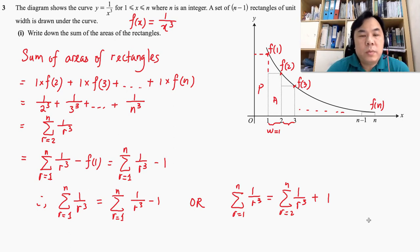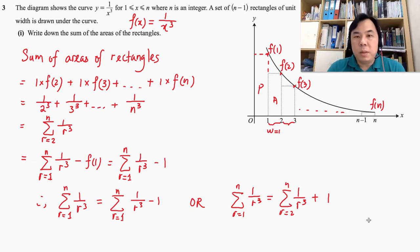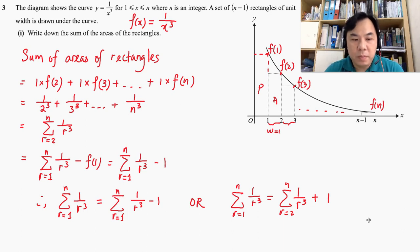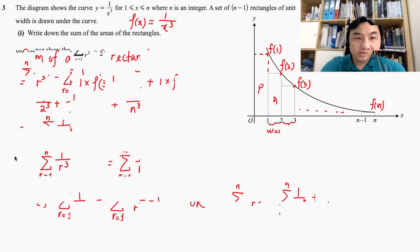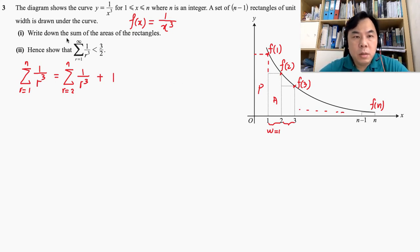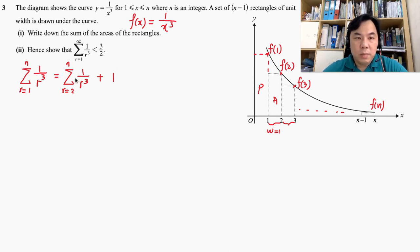Now let's take a look at the second question and see how we actually apply integration to relate that to our summation notation. Now the second question: hence show that this summation is actually less than 1.5. I'd like to recap what we obtained in question 1 — we have obtained this relationship between the two summation forms.